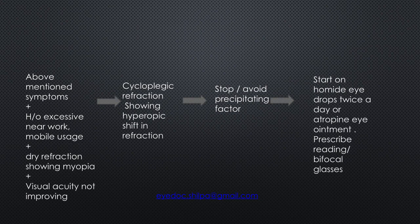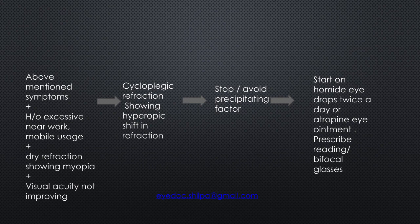Any child with the above-mentioned symptoms, a history of excessive near work or mobile usage, and dry refraction showing variable myopia with visual acuity not improving despite all asthenopic symptoms — go ahead with cycloplegic refraction. If the cycloplegic refraction shows a hyperopic shift, then you can make a diagnosis of accommodative spasm.